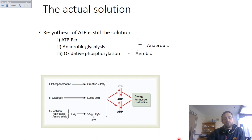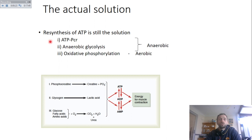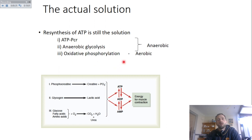So the actual solution is a three-pronged approach to resynthesizing ATP. We have three systems: the ATP-PCr system, anaerobic glycolysis, and oxidative phosphorylation. The first two — ATP-PCr and anaerobic glycolysis — are both anaerobic systems, so they don't use oxygen to resynthesize ATP. Oxidative phosphorylation, as the name indicates, does use oxygen — it's an aerobic process.